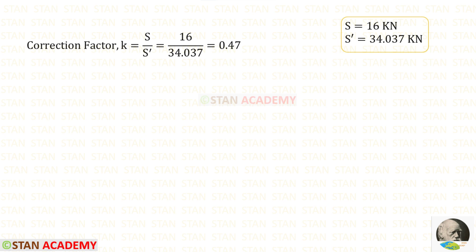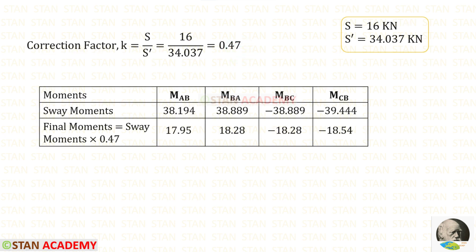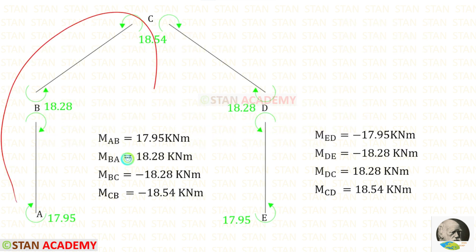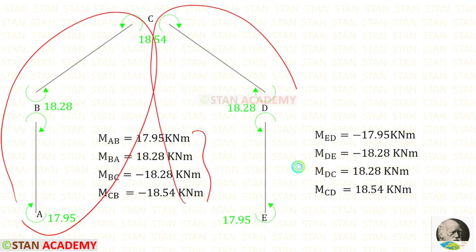Now let us find the correction factor K. The formula is K = S / S'. We have found both values — applying them, we get K = 0.47. Now let us make a table. We first enter all the sway moments. To get the real final moments, we multiply the sway moments by the correction factor K, and that gives us the real final moments.